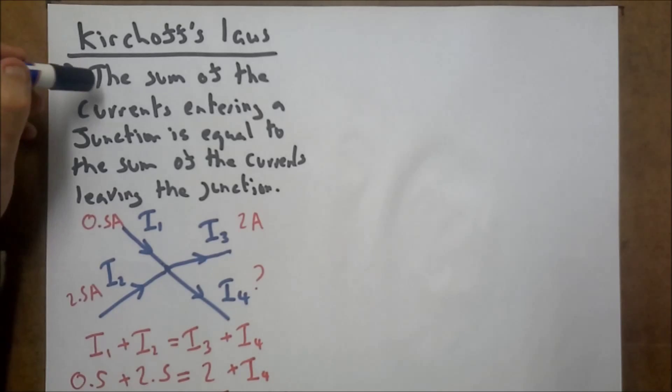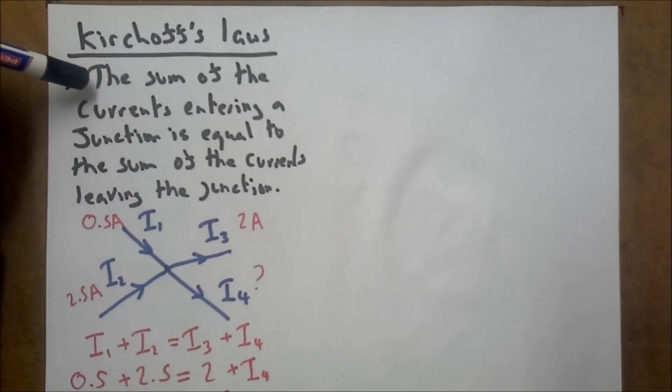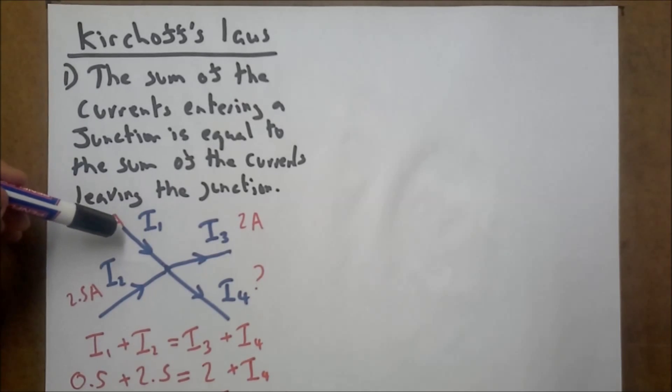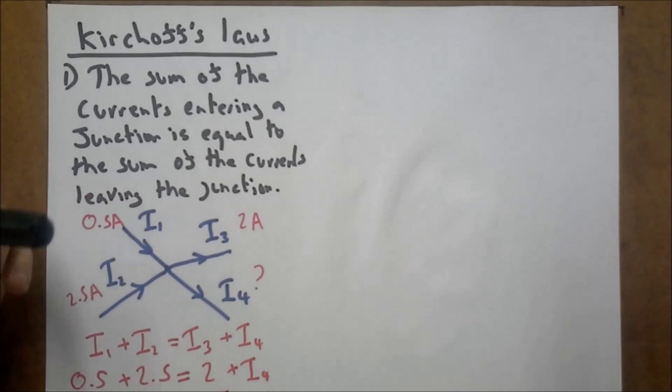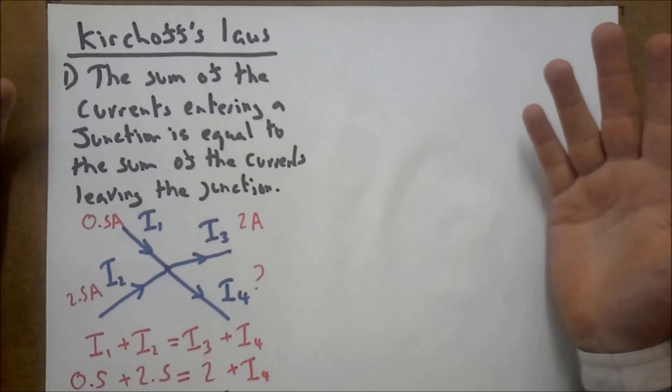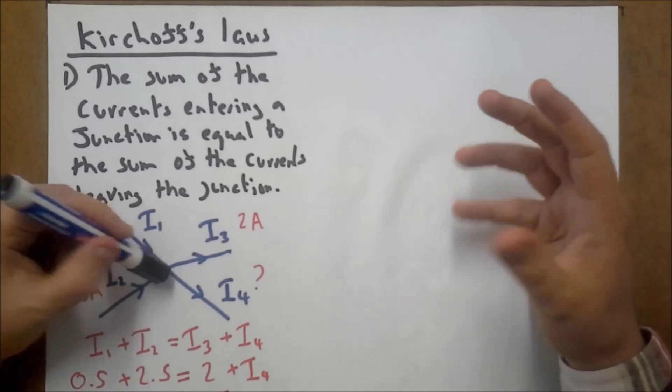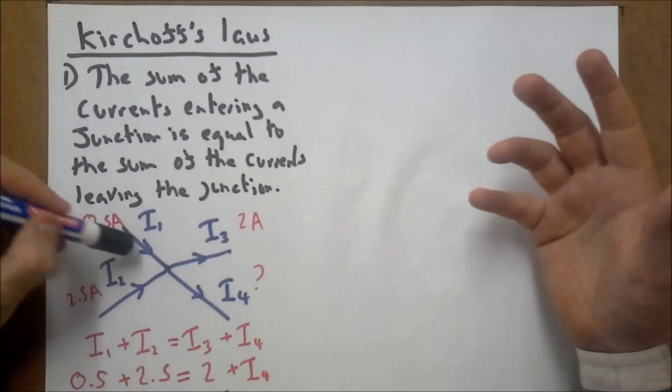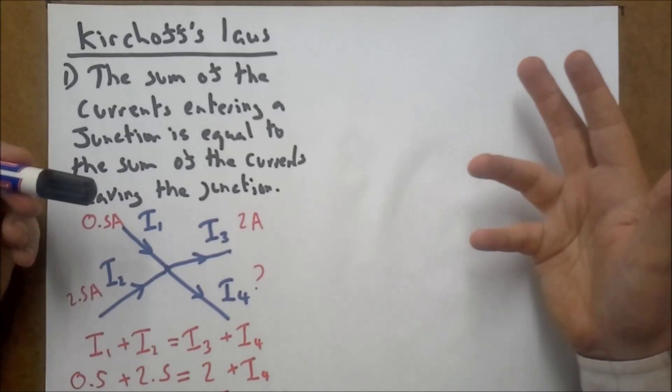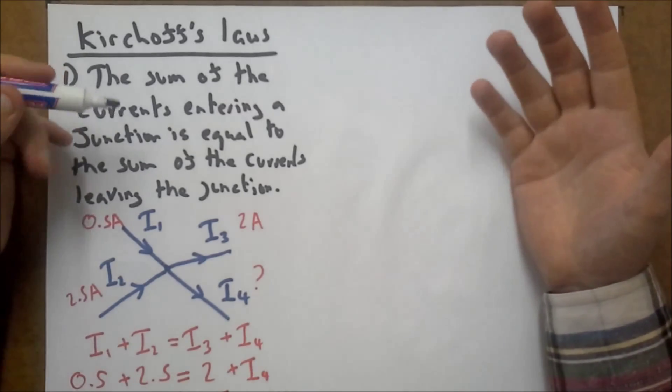So that's Kirchhoff's first law. The reason the law exists is because you've got electrons coming into this junction here - now the electrons have got to go somewhere. You can't have electrons going into a junction and then just disappearing, that's not physics. The electrons coming in, they have to go somewhere,